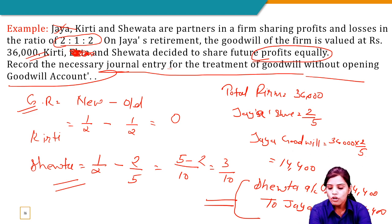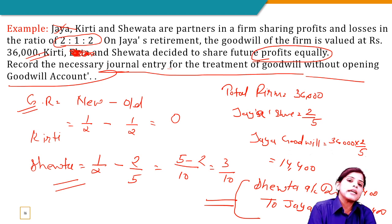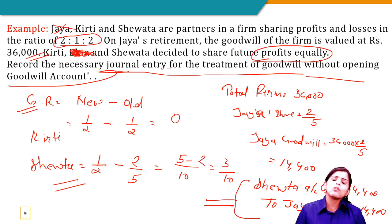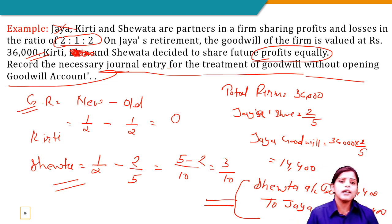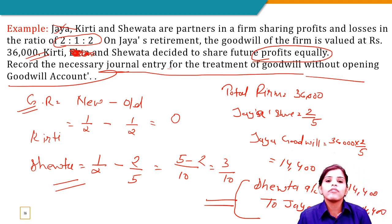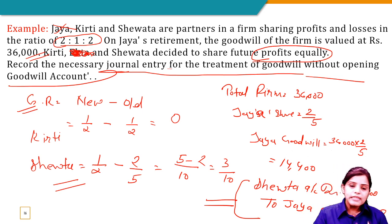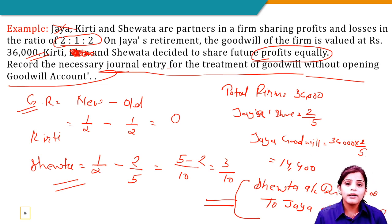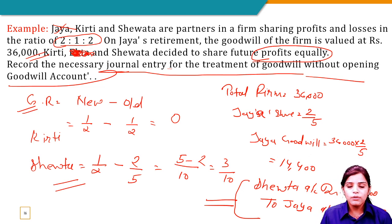आज हमने दो topics को बहुत अच्छे से पढ़ा — first gaining ratio और second treatment of goodwill। इससे related अगर कोई भी query है तो comment section पर ज़रूर लिखिए। इसी तरीके से मन लगा के पढ़ते रहिये, मेरे साथ जुड़े रहिये — retirement of partner के और topics लेके आऊंगी। तब तक के लिए अच्छे से पढ़ाई करिये। Thank you so much!